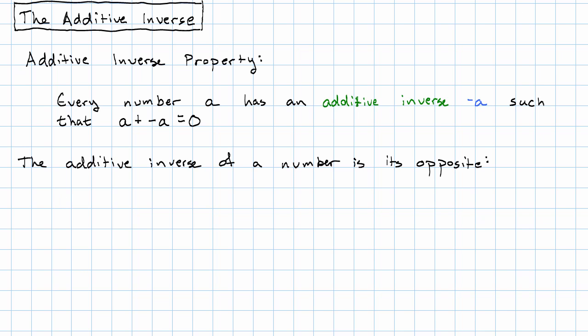So if we have one and a half plus the opposite of one and a half, opposite signs, so we subtract the absolute values. Well these have the same absolute value, so it's just zero. Or if we have negative five plus the opposite of negative five, that means negative five plus positive five, still zero, right?